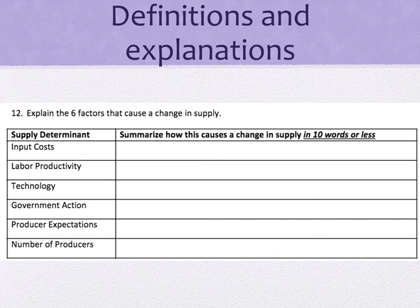The number of producers — also called number of sellers — means that when competitors move into a market there are more producers of that good or service, increasing total quantity supplied. As competitors leave, total quantity supplied decreases. Individually though, more producers means each business makes less. If businesses around you close, individually you'll see an increase in the quantity supplied because everyone comes to you for the product.